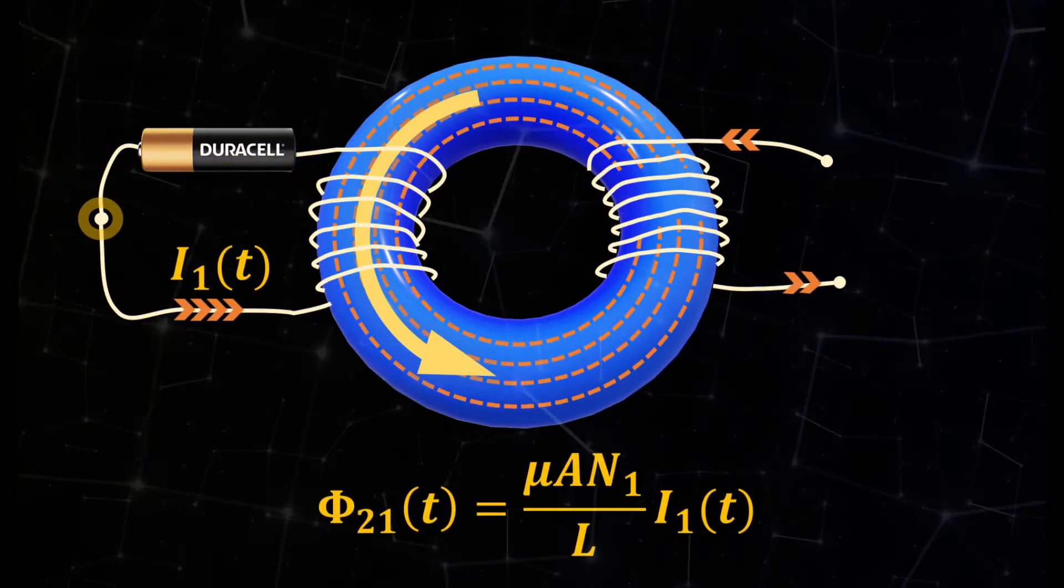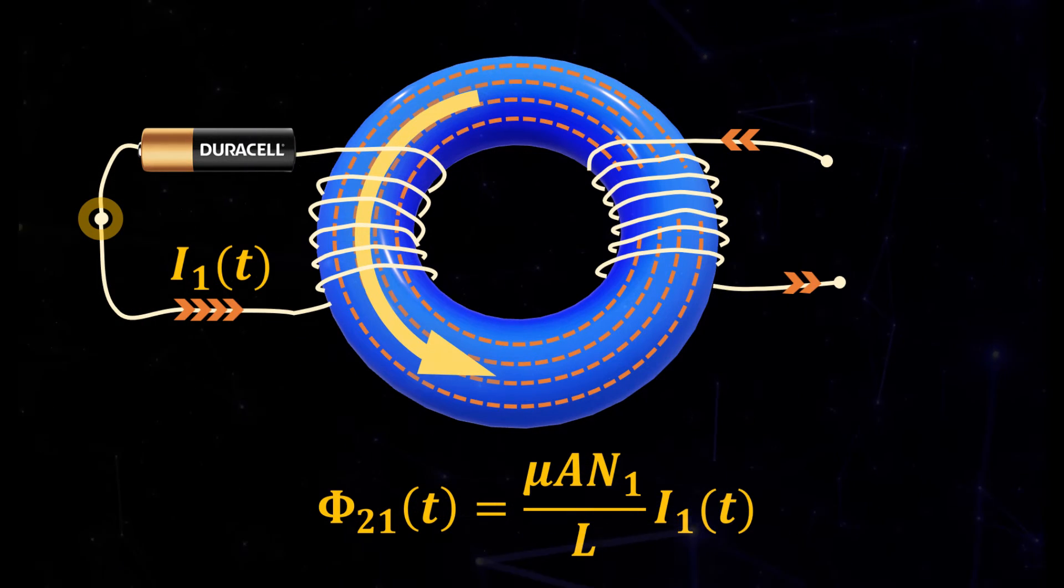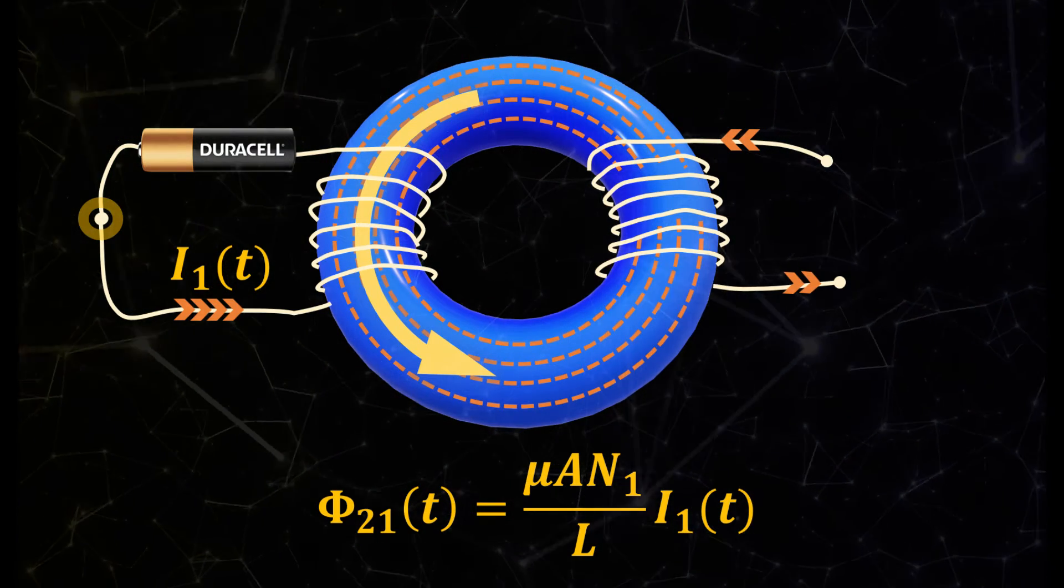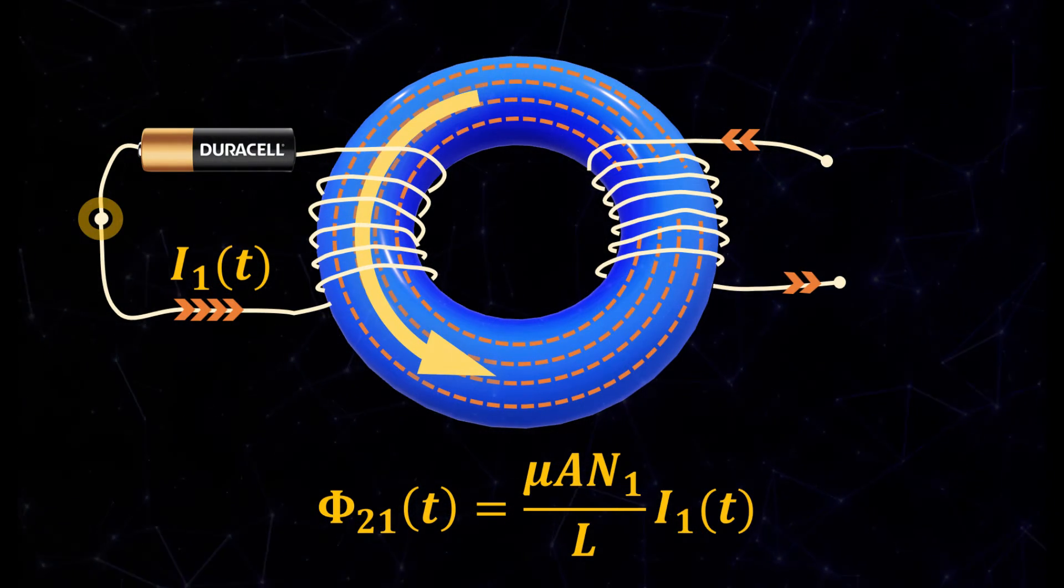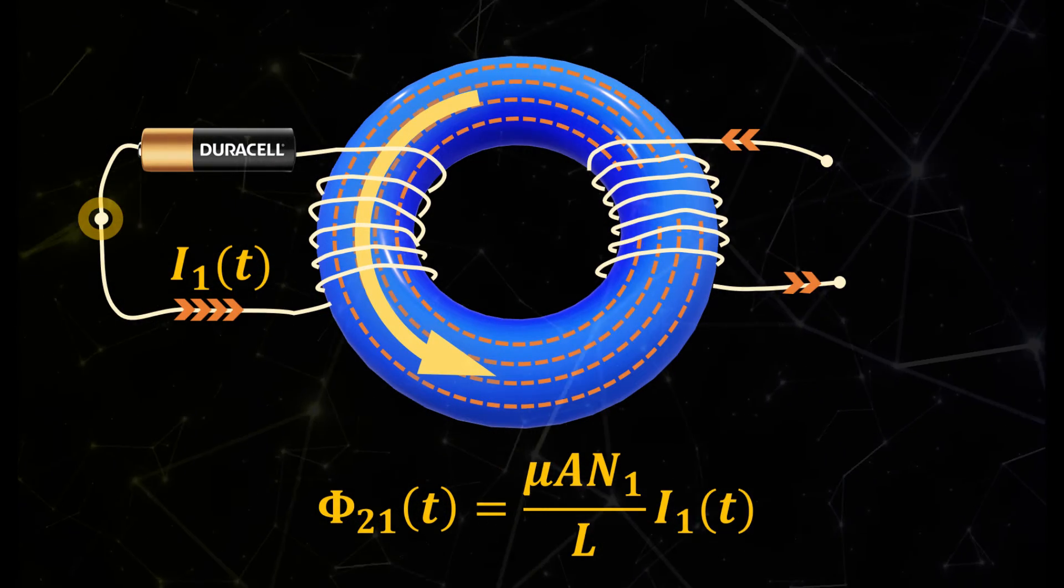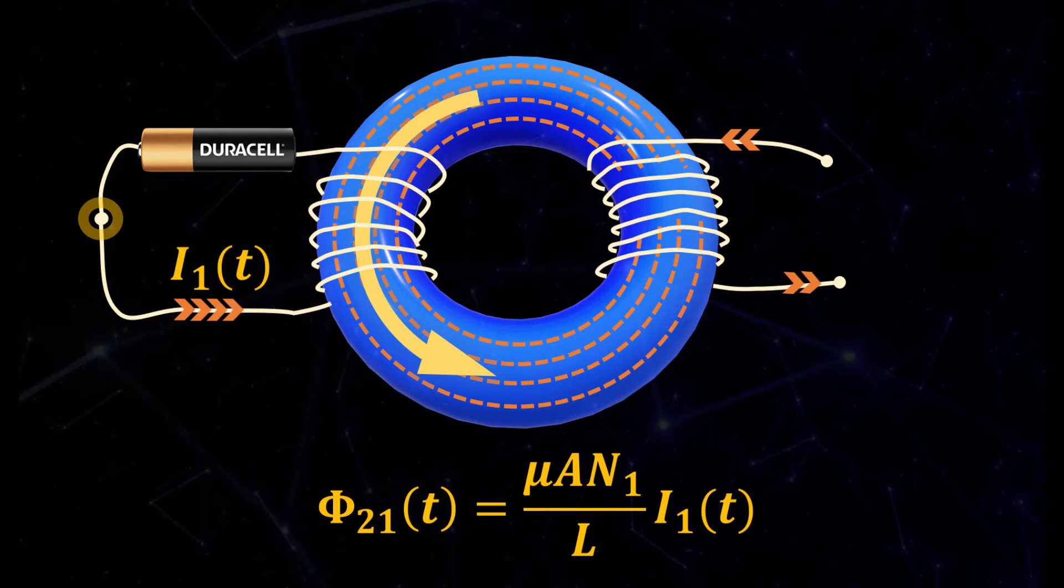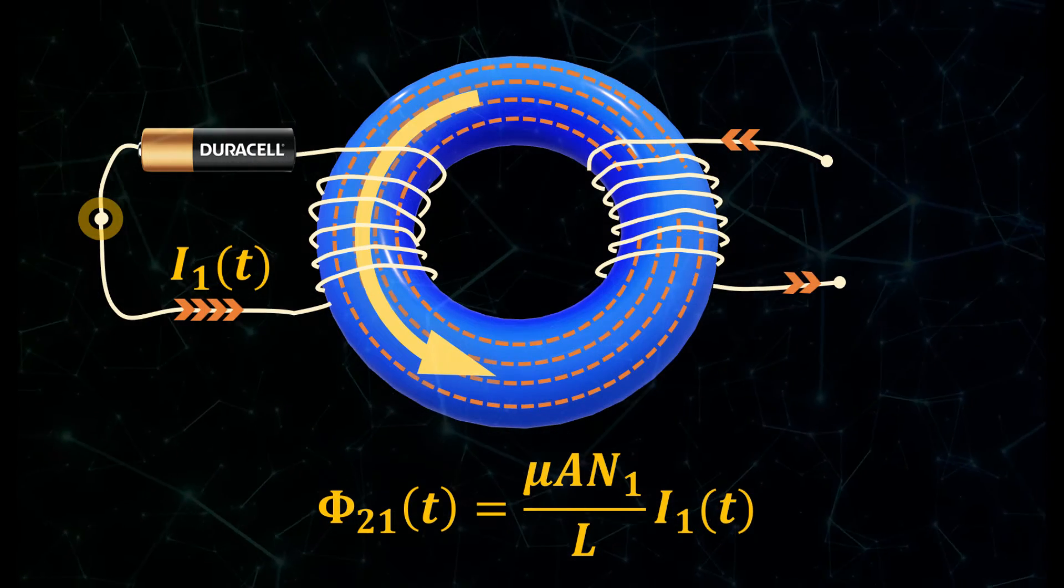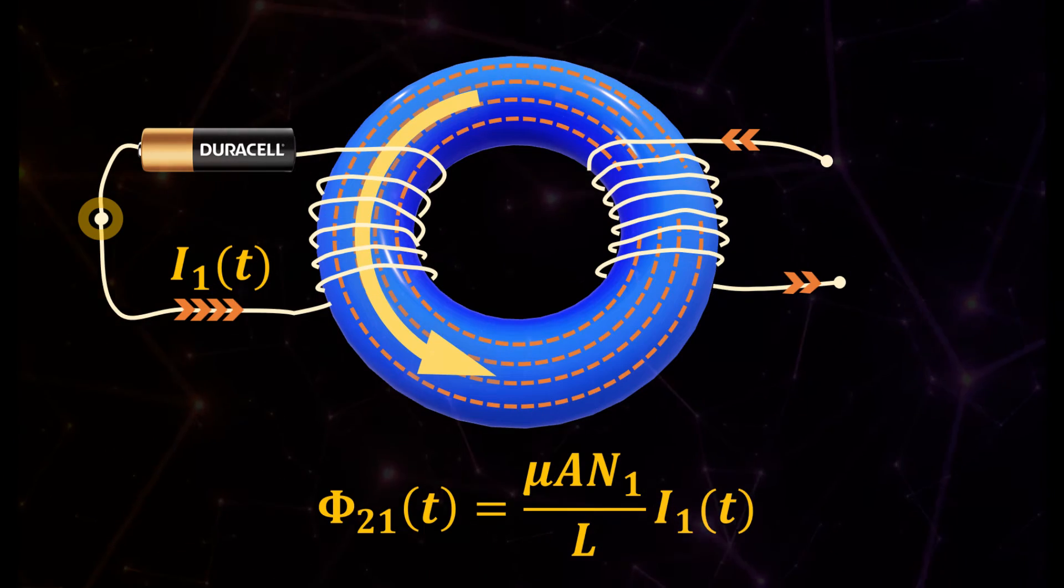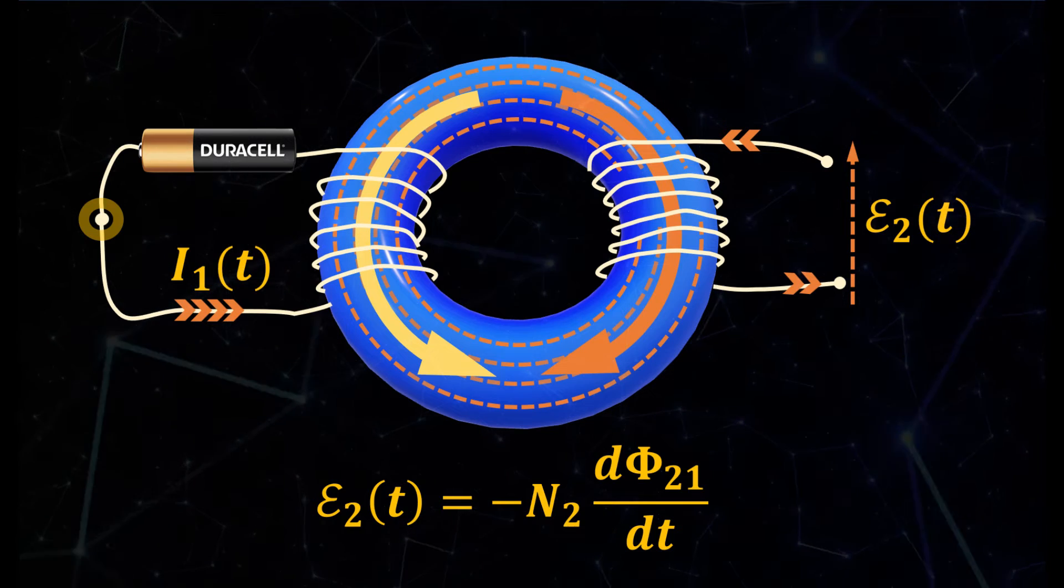We shall describe Faraday's electromagnetic induction experiment in more quantitative terms. The flow of an electric current through the solenoid on the left produces a magnetic flux that links the coil 1 with 2 which we denote as phi 1 2. According to Ampere's law, this is proportional to the current through coil 1, herein denoted as I1. The proportionality constant is given by the permeability times the cross section area A times the number of loops N1 divided by the length of the solenoid L.